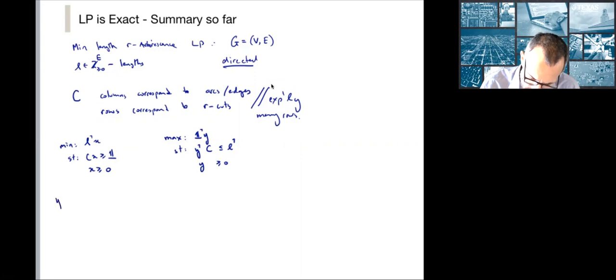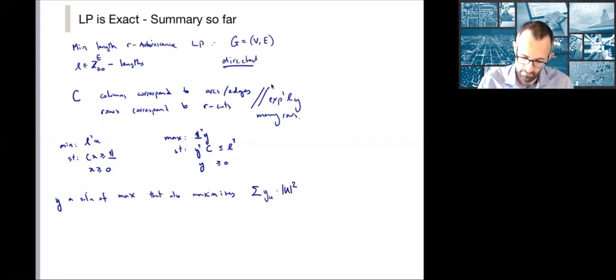What we did last time is we took Y, a solution of the max problem, that also maximizes this quadratic objective. Why did we do that? This does not have two optimization criteria. First, we look at all the maximizers of the right-hand side, and then we choose one that also maximizes this.